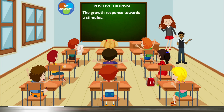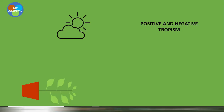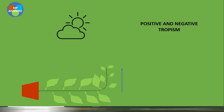Positive tropism is a growth response towards a stimulus, while a growth response away from a stimulus is known as negative tropism. Looking at the diagram, the blue arrow shows positive tropism where the plant grows towards the sun — a positive phototropic reaction. The white arrow shows the root going downward — a positive geotropic reaction. The shoot shows a negative geotropic but positive phototropic reaction, while the root shows a negative phototropic but positive geotropic reaction.